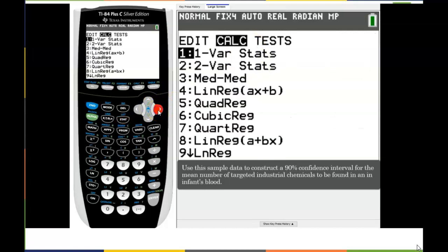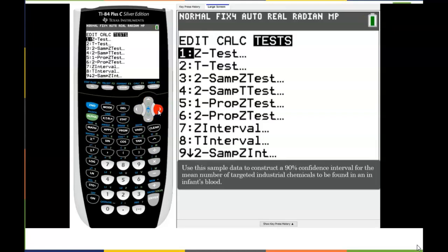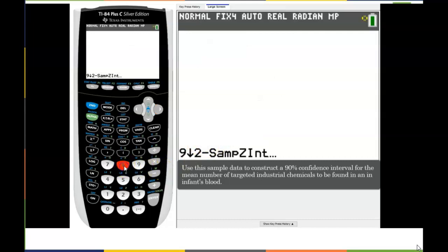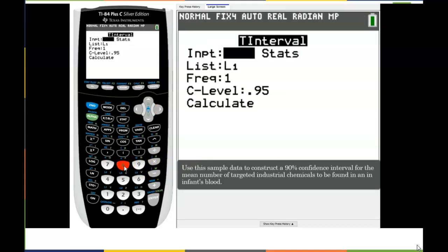I'm going to go to stats and go to tests. Very similar to a Z test, we're going to do a T test, and it is a T interval. Very similar to a Z interval, I'm going to do a T interval, so 8. Now I do have data, I'm not using statistics. My list is in L1, the frequency is one, but my confidence level, I want a 90% confidence. So 0.90 and I'm going to calculate it.